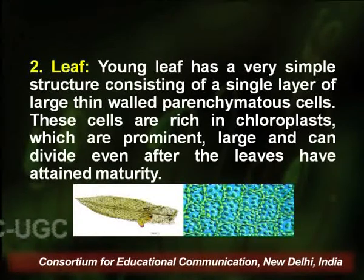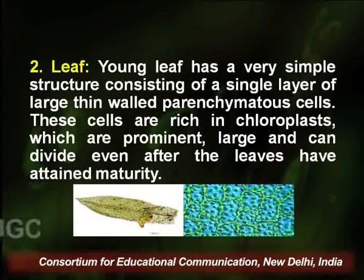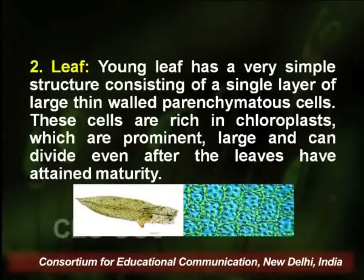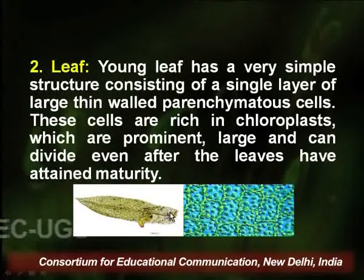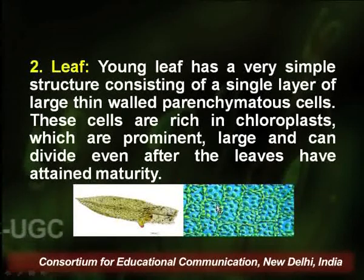The young leaf has a simple structure consisting of a single layer of large thin-walled parenchymatous cells rich in chloroplasts. These chloroplasts are large and prominent and can continue dividing even after the leaves have attained maturity. In the diagram, individual leaf cells show multiple large prominent chloroplasts with the ability to keep multiplying even after complete maturity.